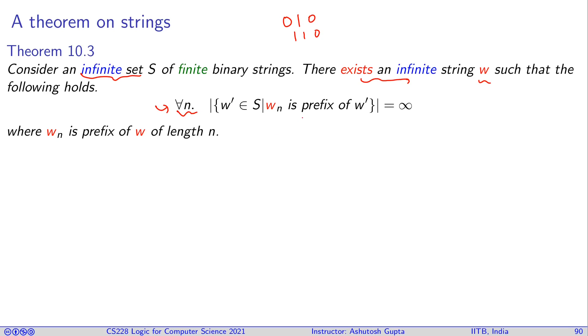So you can construct a W string such that the following holds. Just pay attention. What does it mean? For all n, you take a prefix, n prefix. So you created this W which is infinitely long. For every n you pick a prefix, that is my W_n. The claim is W_n is prefix of infinitely many strings in S. Let's see how can I find such a W?